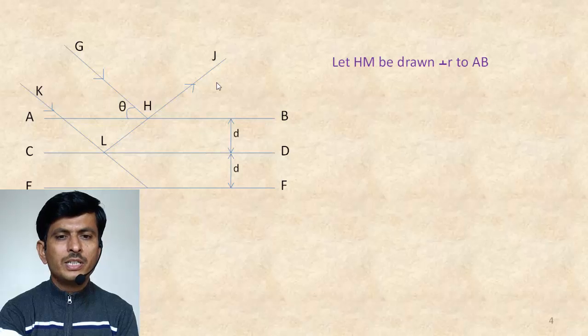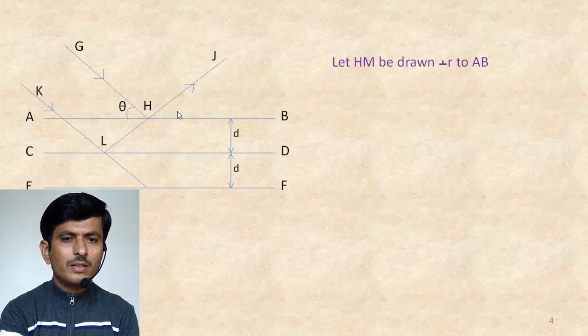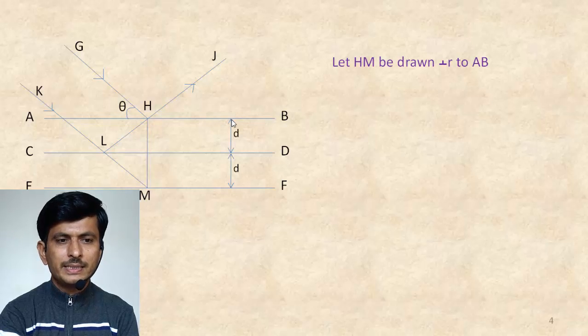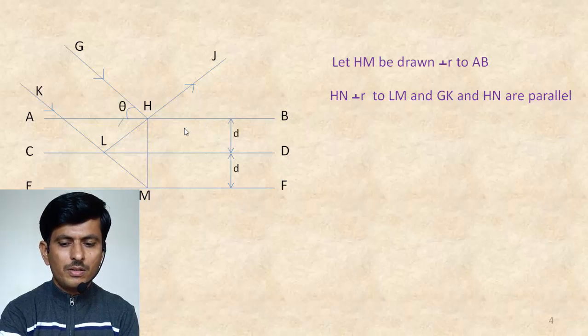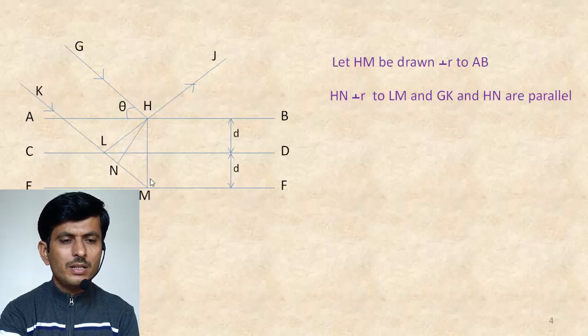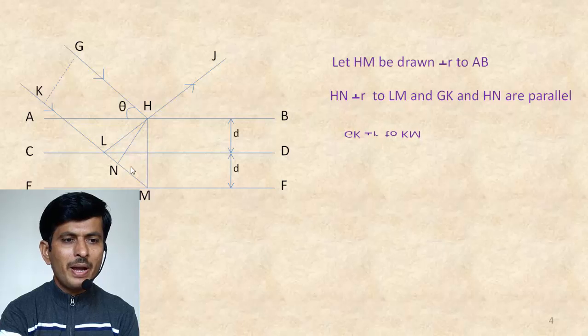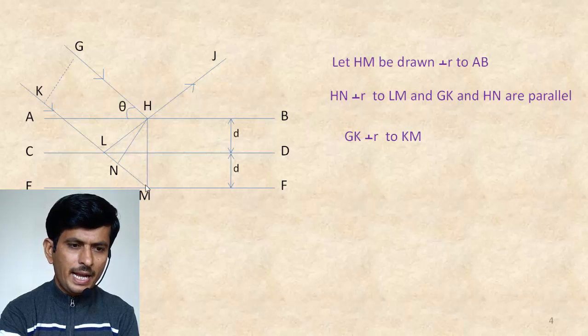Now, deriving this reinforcement condition, let's draw HM, line HM perpendicular to the plane AB. Second, draw the line HN perpendicular to the line LM. Again, the two lines GK and HM are parallel to each other. Therefore, this GK is perpendicular to the line KM.